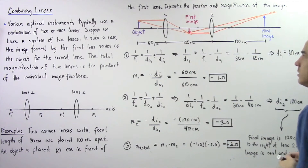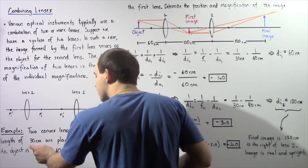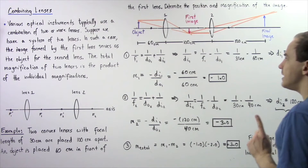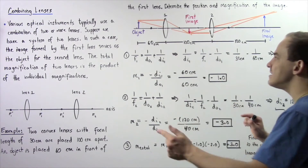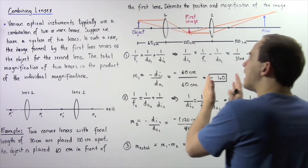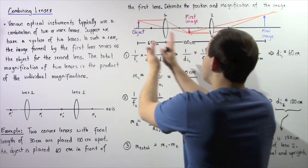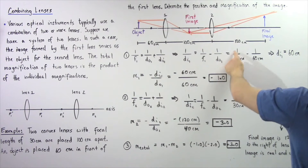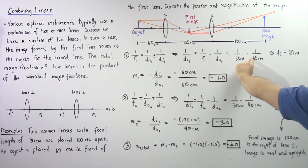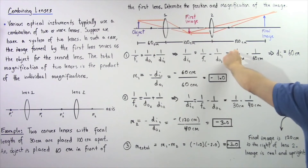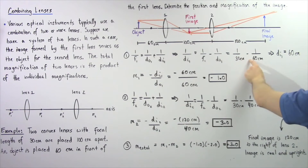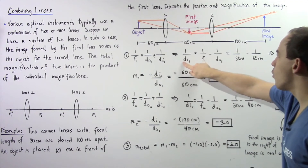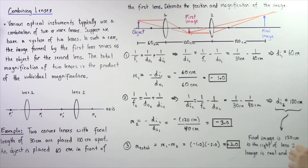The focal length of lens number one is positive 30 centimeters — positive because we're dealing with a convex or converging lens. The object distance is positive 60 centimeters, positive because the object is on the same side as where the light originates. So one divided by the image distance equals one over 30 minus one over 60, which gives us two over 60 minus one over 60, equaling one over 60. Therefore, the image distance for lens one is positive 60 centimeters.